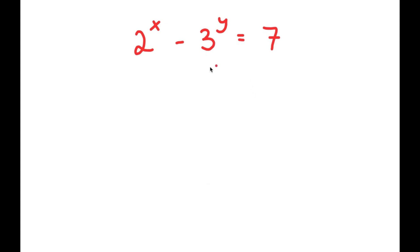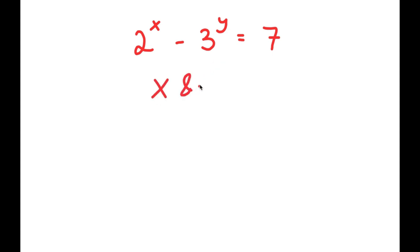In this problem, I have 2 to the power of x minus 3 to the power of y is equal to 7. I'm going to find the values of x and y.